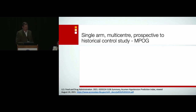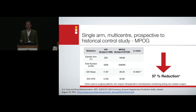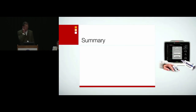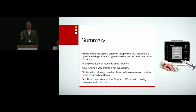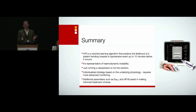Real-world data from the U.S. MPOG study across 11 hospitals shows that if you use HPI in real-world practice, you reduce hypotension by almost 60% — a very consistent message. The tools are there; we just have to engage with them and learn to use them properly. So, HPI is a machine-learning algorithm that predicts hypotension before it happens, but think of it more as reflecting instability in the cardiovascular system. Just running a vasopressor is not the solution. What we need is an individualized strategy based on the true underlying physiology, with much more monitoring than just a CVP and an arterial line. If we treat instability proactively using these advanced parameters and HPI, we can reduce hypotension significantly in our day-to-day practice. That's got to be good for patients. Thank you very much.